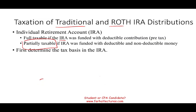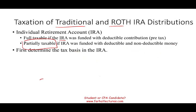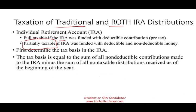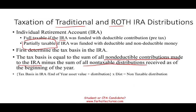What is the tax basis? The basis is the money that was non-deductible — meaning you already paid taxes on it and were not able to deduct it. So that's your basis in the IRA. Remember, you don't pay your taxes twice: if you already paid taxes on it, when you take this money out, you don't have to worry about it. The tax basis equals the sum of all non-deductible contributions made to the IRA minus the sum of all non-taxable distributions received as of the beginning of the year. Your basis will go down from year to year as you use it. You have to figure out a ratio — what is your ratio of the basis?